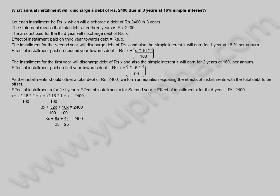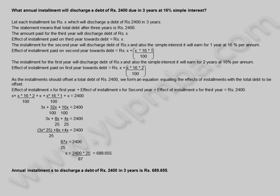Simplifying the equation: 3X plus (8X/25) plus (4X/25) equals 2,400. Combining terms: 87X/25 equals 2,400. Solving, X equals 2,400 × 25 / 87, which equals 689.655 rupees. The annual installment to discharge a debt of 2,400 rupees in three years is 689.655 rupees.